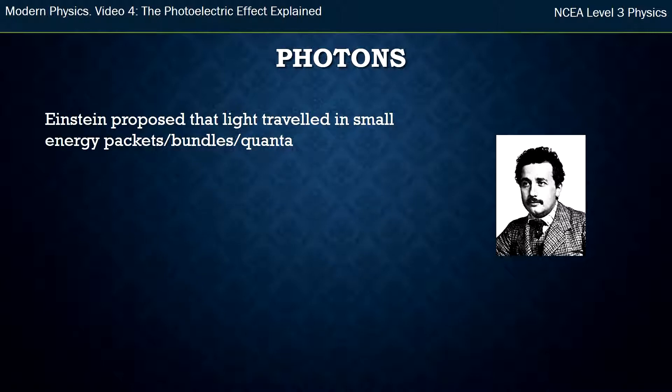So what did he explain or what did he propose? He proposed that light itself didn't just travel as a wave, as a continuous wave, but it came in small energy packets or small energy bundles or small energy quanta. So that's where the word quantum for quantum physics comes from. It just means discrete amounts of energy.